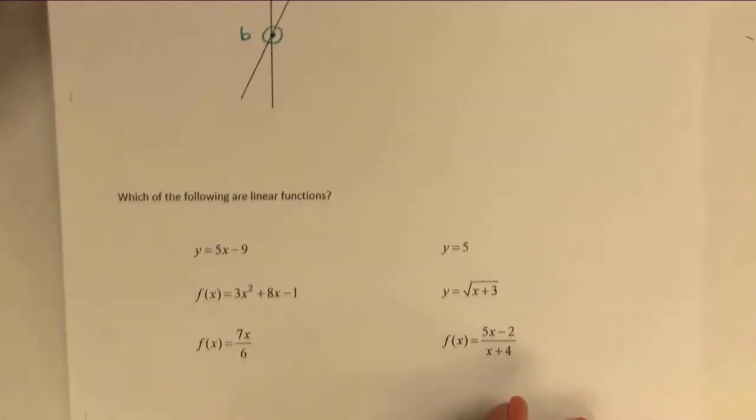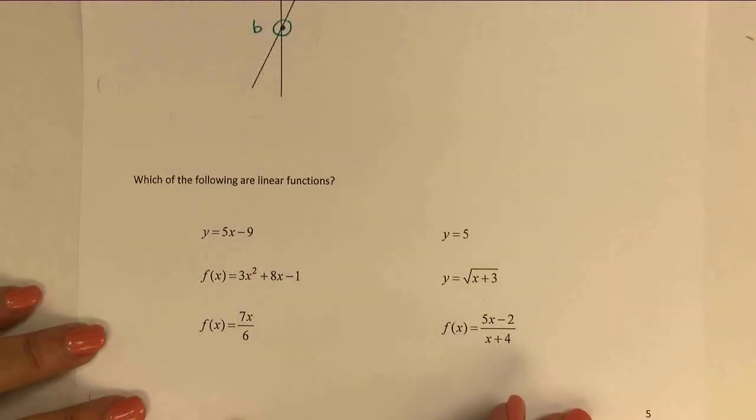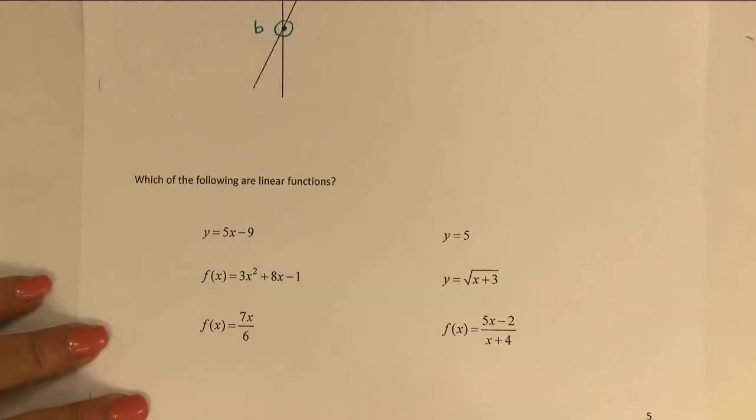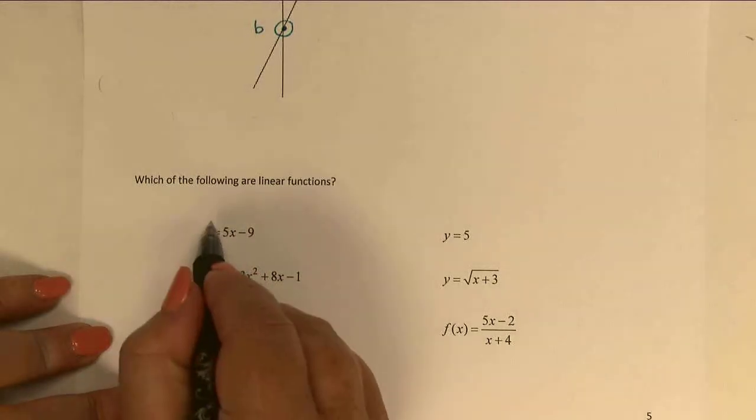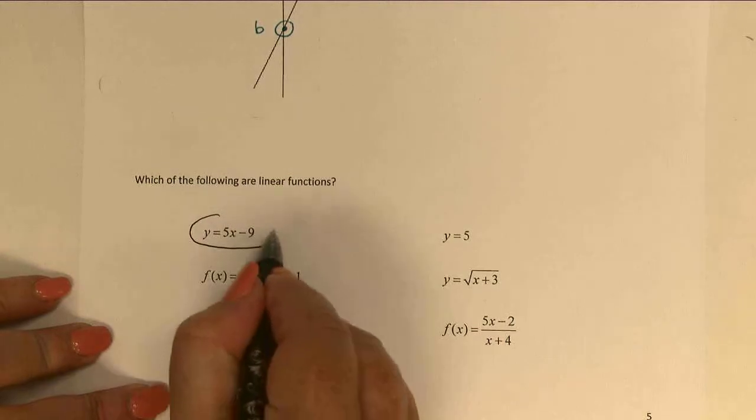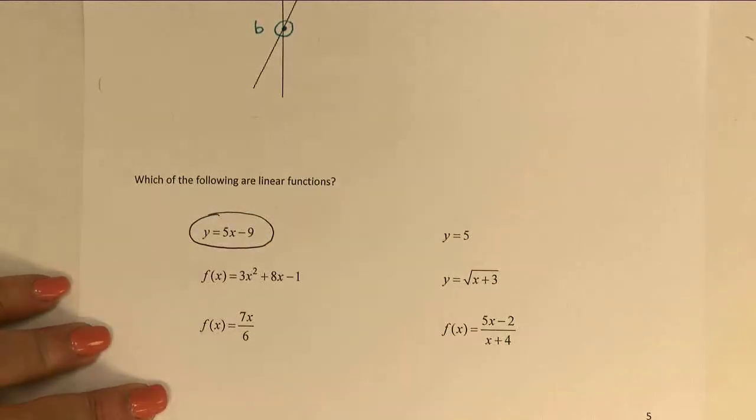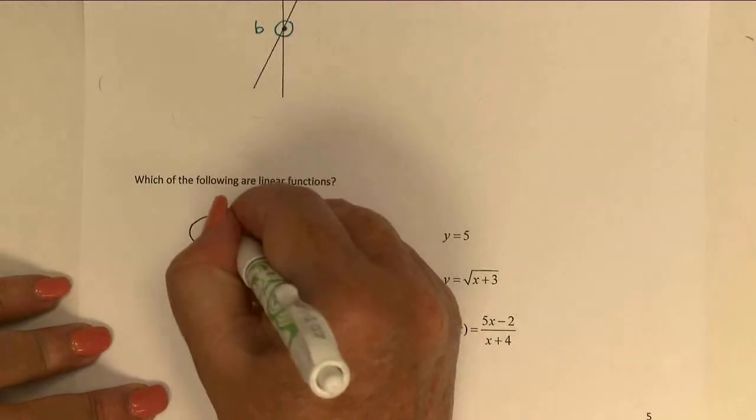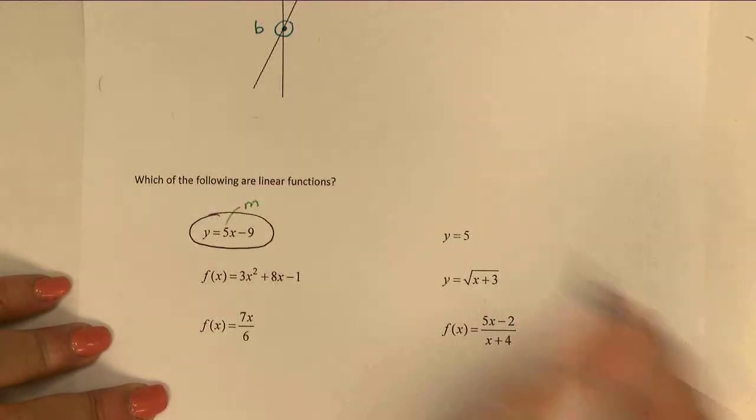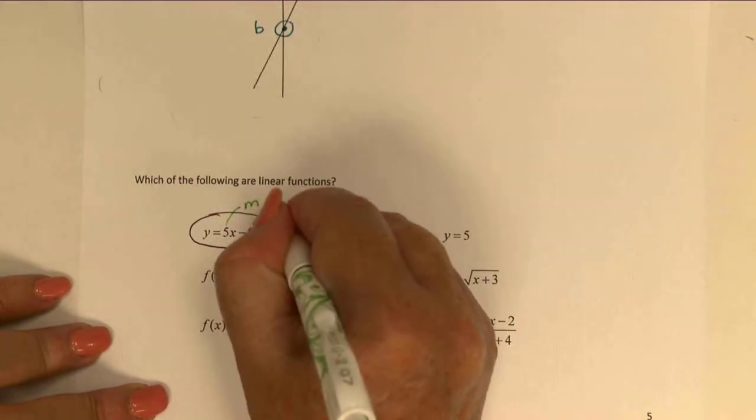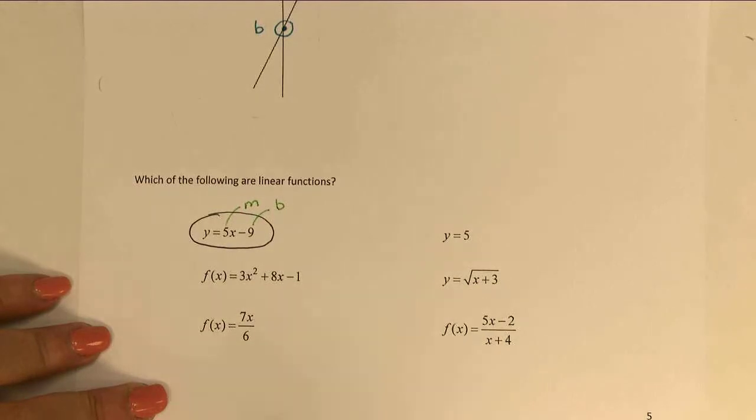The most obvious one is probably the very first. We have y = 5x - 9, and we can see that this is already in exactly the form that we need. 5 would represent our m, and the negative 9 would represent our b. And so there's our y = mx + b right there.